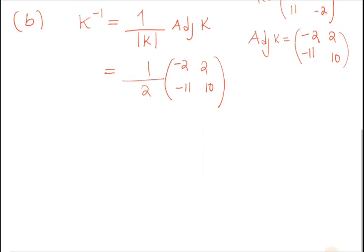Of course, this 1/2 is multiplying everything inside. What is 1/2 times -2? You get -1. This 1/2 times 2 you get 1. What is 1/2 times -11? You get -11/2. What is 1/2 times 10? You get 5.